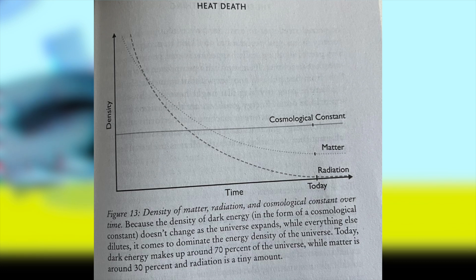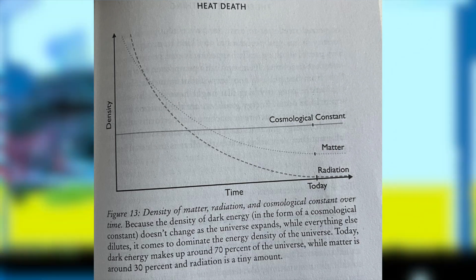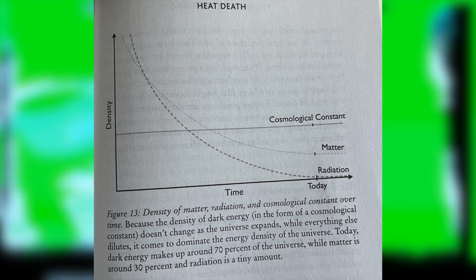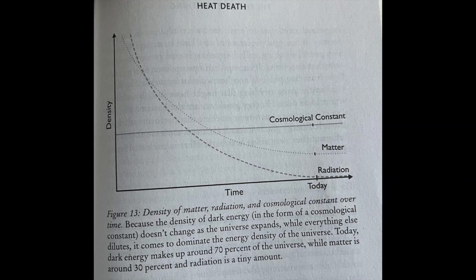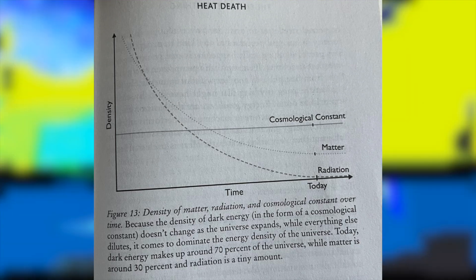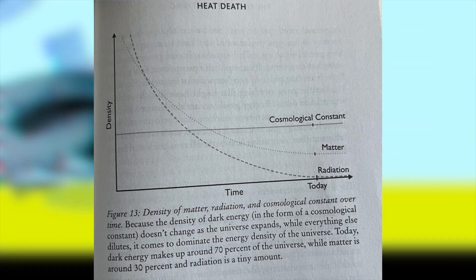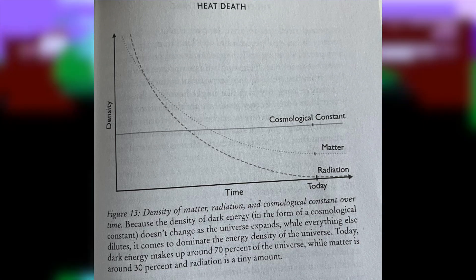When the universe reaches a state of steady exponential expansion, you could define a radius from wherever you are, beyond which the rest of the cosmos is forever hidden. It's a true horizon in the sense that nothing beyond it could ever reach you. It turns out that this horizon, like a black hole's horizon, also has entropy associated with it, and thus a temperature. The difference is that instead of the heat going out, like it does with a black hole, it goes in.